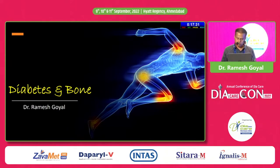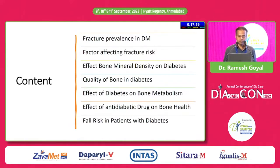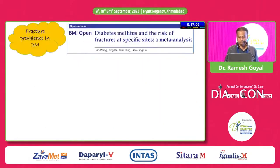So these would be the two halves of my talk. This is going to be the flow: I will start with fracture prevalence in diabetic patients, factors affecting fracture risk, effect of BMD on diabetes, quality of bone in diabetics, effect of diabetes on bone metabolism, effect of anti-diabetic drugs on bone health, and fall risk in patients with diabetes.